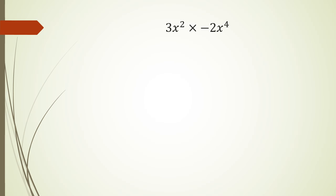This time we have a combination of variables and integers. What we want to do is deal with the numbers first. So 3 times negative 2 is negative 6, and what we have remaining is x squared times x to the power of 4. We know that the powers get added, so that's x to the power of 2 plus 4, giving us a final answer of negative 6 x to the power of 6.